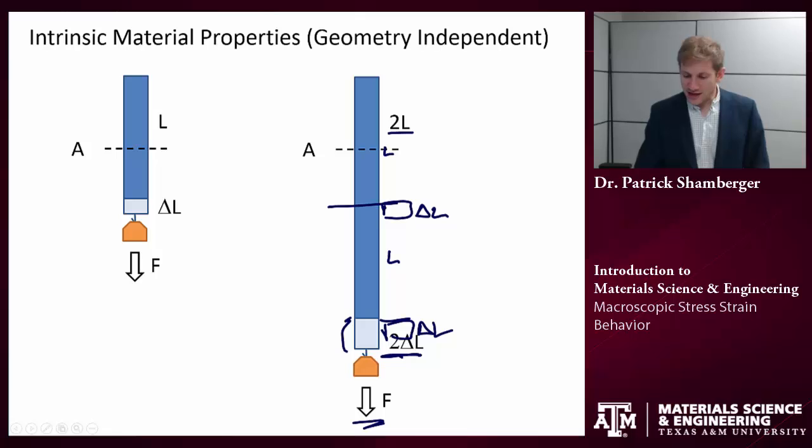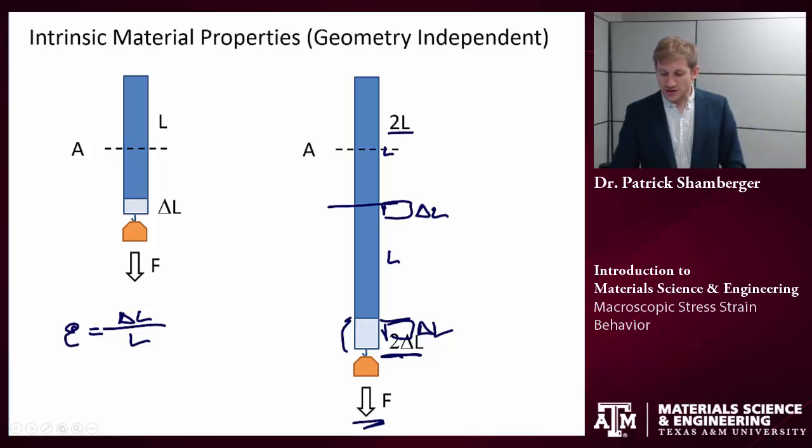Rather than talking about elongation, usually we talk about strain. Strain is defined as the elongation over the original length. This is unitless. Delta L could be in meters, but the original length would also be in meters, and those would cancel out.